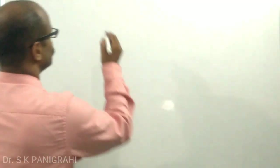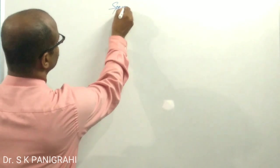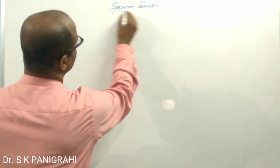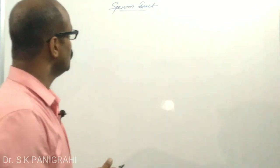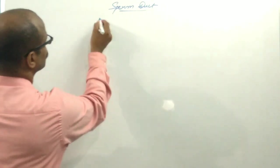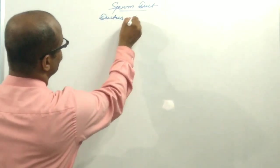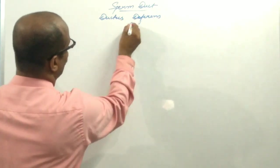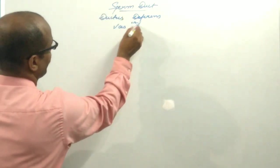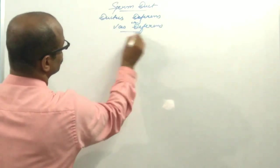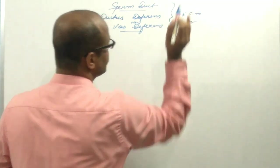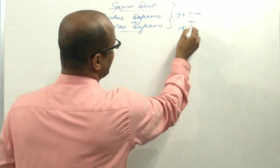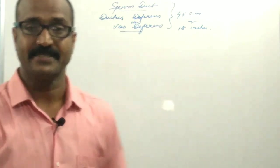Now we come to the sperm duct. The sperm duct is the duct which carries the sperm from the production site, that is the testes, to the exterior side. This is known as the sperm duct, also known as ductus deferens or vas deferens. This duct is about 45 cm (18 inches) long in humans.